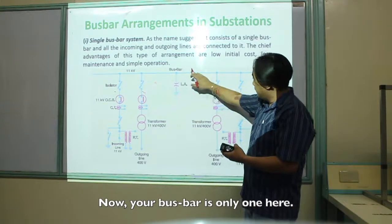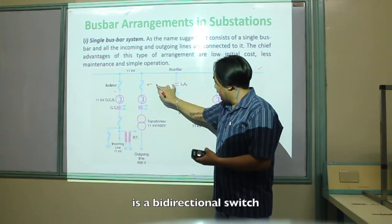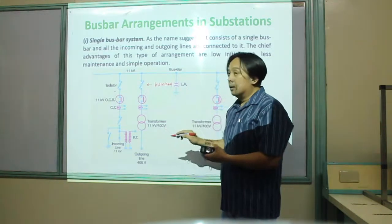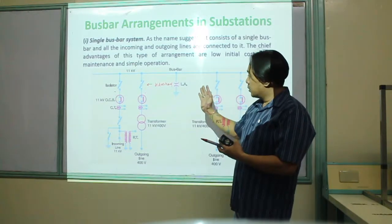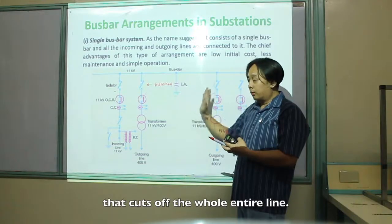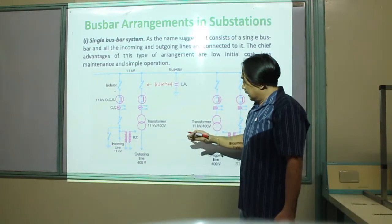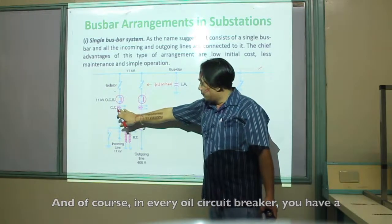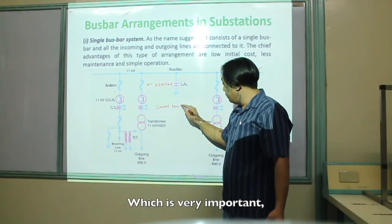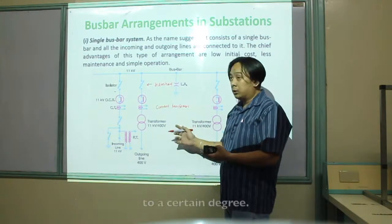The isolators here are a bi-directional switch — they can isolate in two ways. Your isolator is a blade switch that cuts off the entire line. We also have an OCB breaker connected in series with every feeder. In every OCB breaker, you have a relay. The relay works with current transformers, which are very important in decreasing or minimizing fault current to a certain degree.